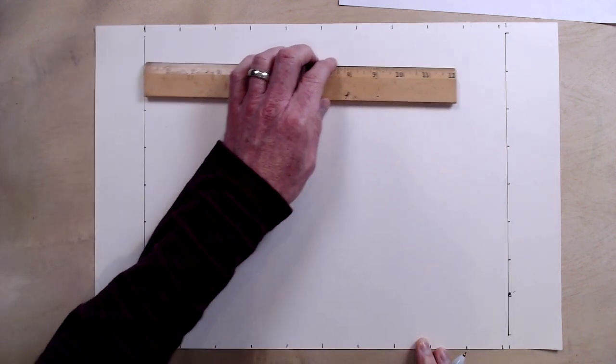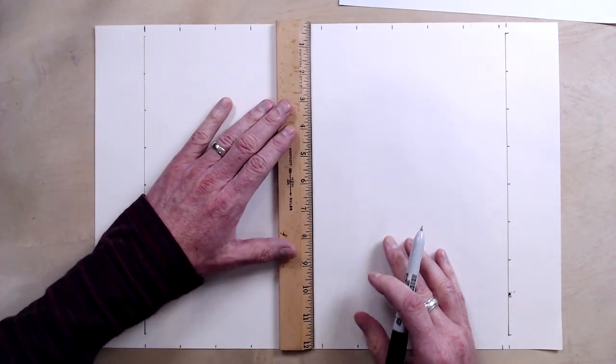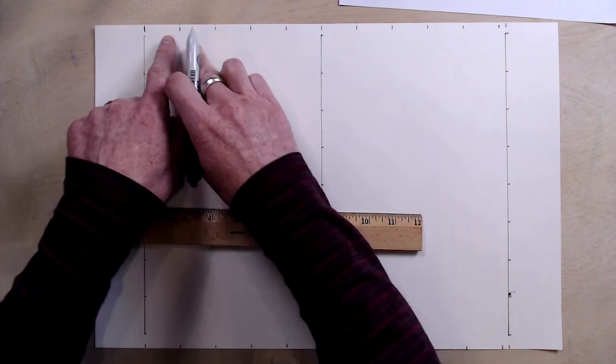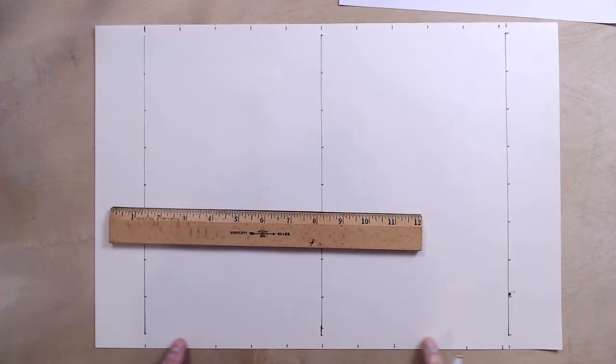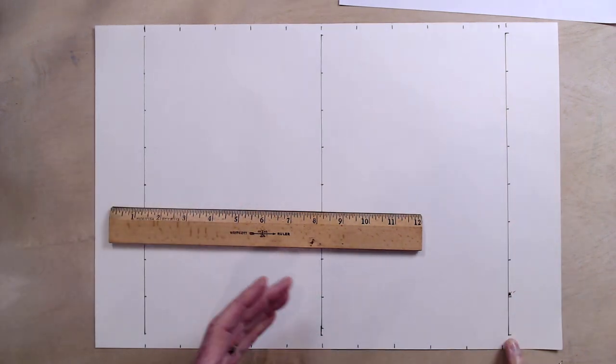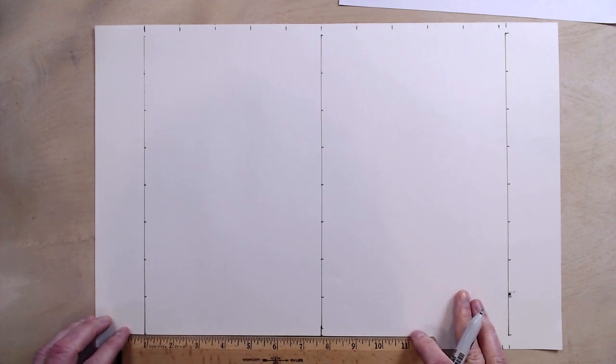But obviously my ruler doesn't go all the way across here. So I need to do one in the middle. Now I have marks along the top. I have marks along the bottom. I have marks going vertically on the two sides and in the middle. What I need to do at this point is merely connect my lines.